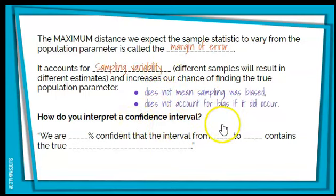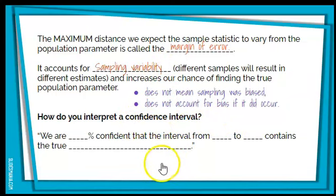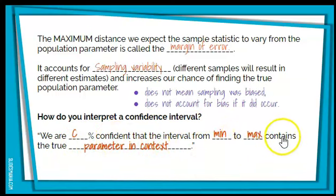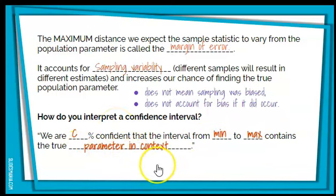How do you interpret a confidence interval? You're going to use this framework: 'We are [some confidence level] confident that the interval from [minimum] to [maximum] contains the true [parameter in context].' I'll model this for you in the next few slides.